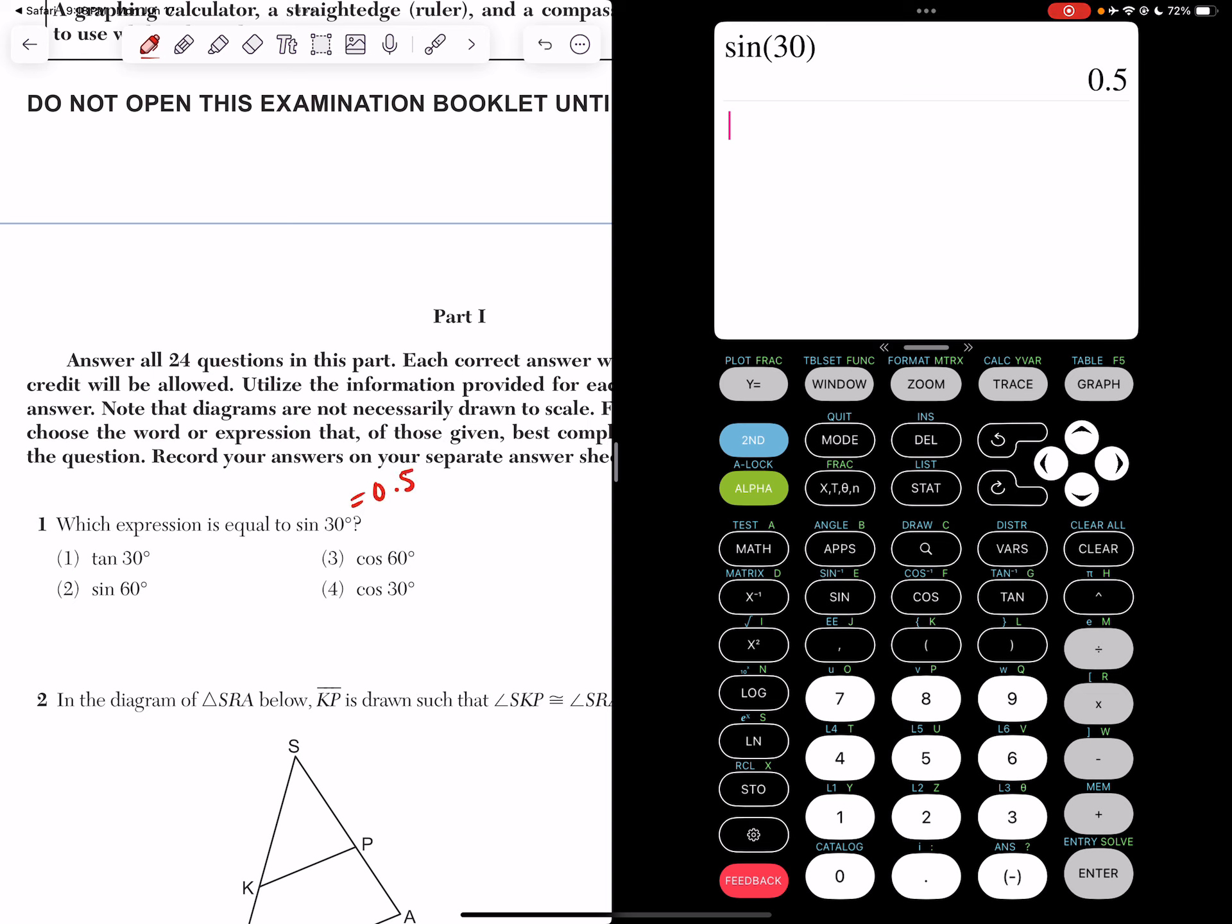So if we type in our answer choices like choice one, which says the tangent of 30, that doesn't give us 0.5. It's wanting to know which expression is equal to the sine of 30. Now if I type in the sine of 60, I do not get 0.5.